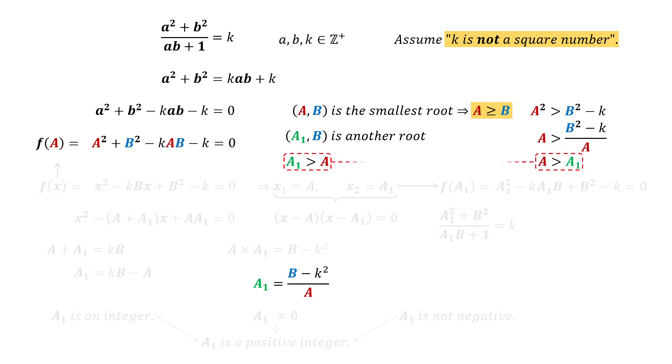Now we have a contradiction. A is both smaller than and greater than A1. This contradiction stems from our assumption that K is not a square number. Therefore, by contradiction, K is a square number.